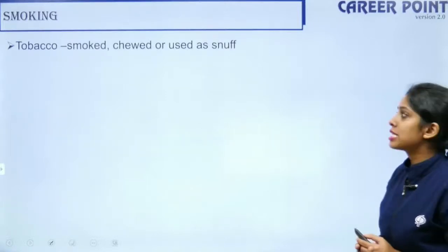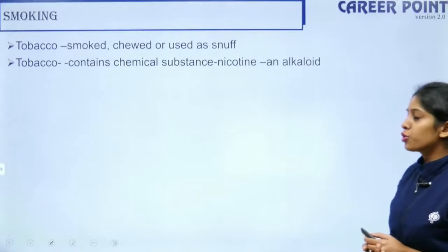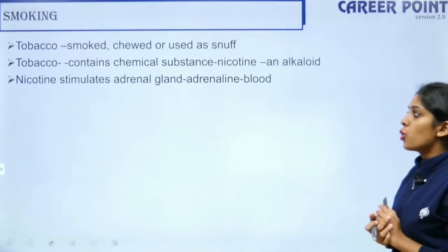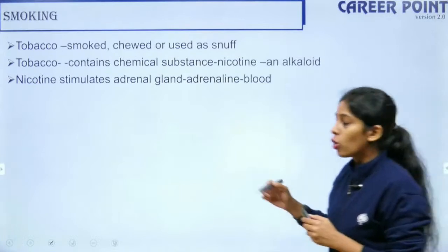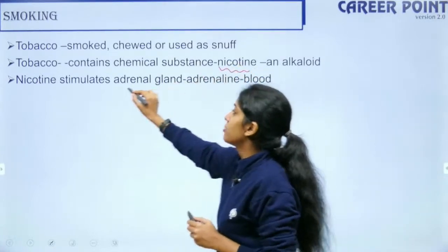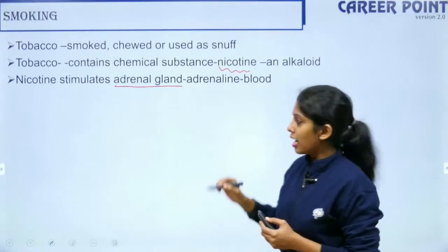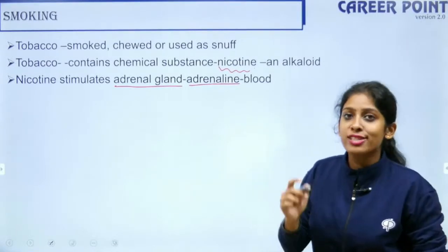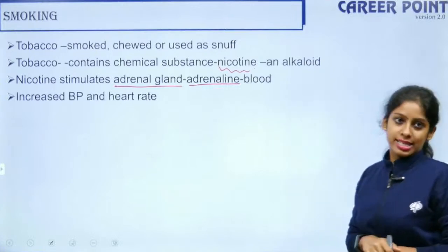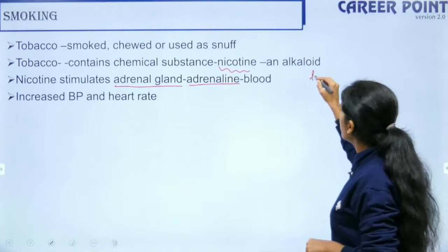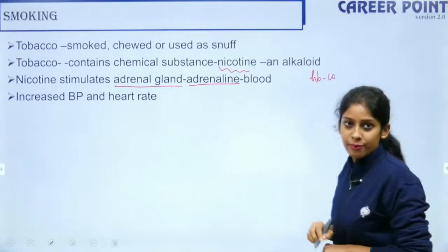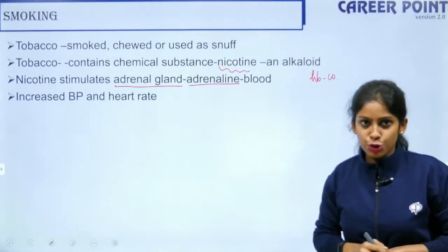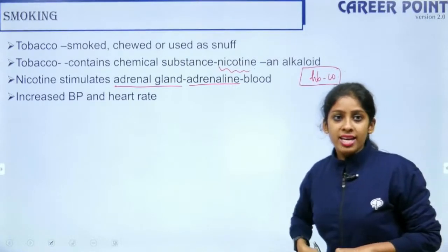Tobacco is smoked or used as snuff and contains nicotine, an alkaloid. Nicotine stimulates the adrenal gland, causing release of adrenaline, which increases heart rate and blood pressure. Nicotine also increases hemoglobin's affinity for carbon monoxide, which is normally already higher than for oxygen.